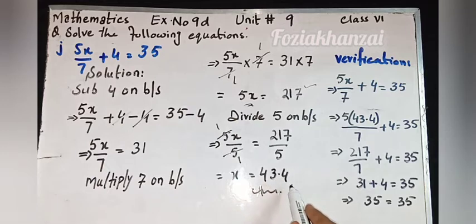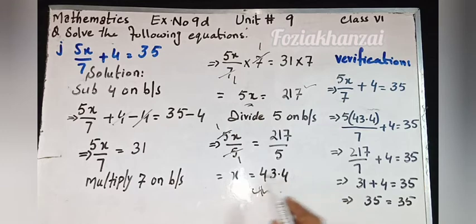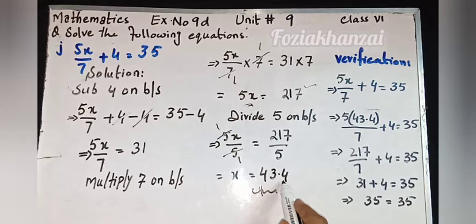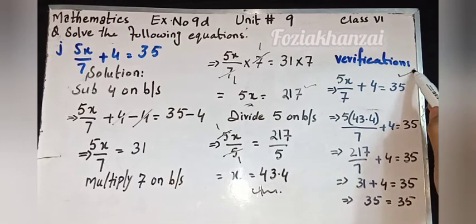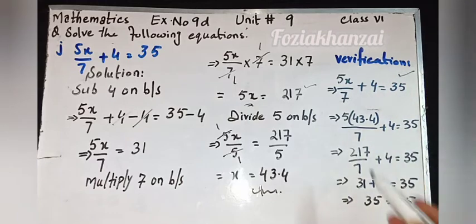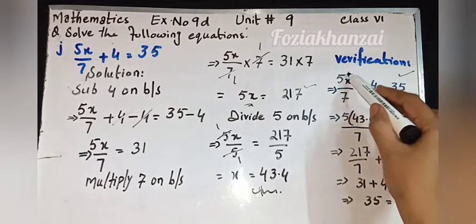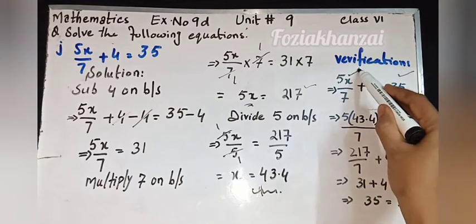217 divided by 5 gives the answer 43.4. Before the decimal is 43, after the decimal is 4. Read the single digit 4. So x is equal to 43.4.